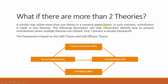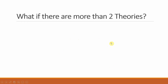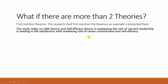What if there are multiple relationships and multiple theories in your study? How do you write the contribution to theory in that case? A scholar may utilize more than one theory in a research paper or thesis. In such a scenario, contribution is made by two theories. Here is a sample framework where the two theories used are LMX theory and self-efficacy theory — self-efficacy explains one relationship and LMX the other. Obviously you have to first mention both theories.